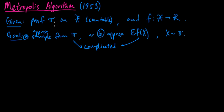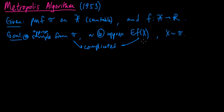The approach the Metropolis algorithm takes is to construct a Markov chain that has π as its stationary distribution, in such a way that it's easy to sample from. Then you apply the ergodic theorem: if you run your Markov chain long enough and pick off the last state, that's going to be approximately distributed according to π. The ergodic theorem also tells you that as long as the chain is ergodic and irreducible with stationary distribution π, you can approximate the expected value using the sample mean over all states the chain visits.